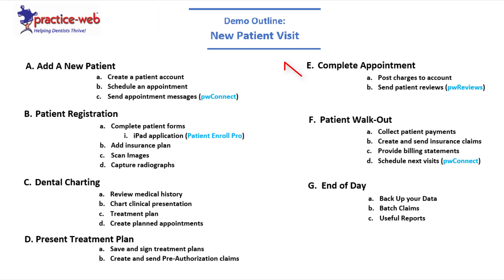Next, we'll complete the appointment by charging whatever services were completed that day, which ties into our review feature. Then patient walkout: collecting patient portions, working with claims, sending them out, distributing billing statements, and scheduling next visits. Letter G covers end-of-day activities like backing up your data, sending batch claims, and locating useful reports.